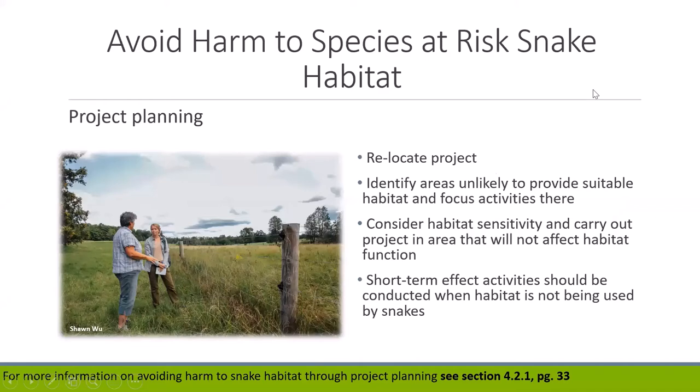Although recommendations should be considered on a case-by-case basis, the following are generally effective methods for avoiding adverse effects to snake habitat. The best way to avoid adverse effects to species at risk snakes is to relocate the project to an area where they will not be affected. If working in an area with SAR snakes, identify areas unlikely to provide suitable habitat and limit potentially damaging activities to those areas, such as a cash crop field or old parking lot.